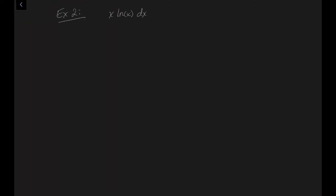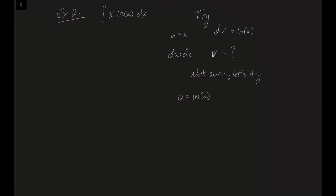Now let's look at the next example: the integral of x times the natural log of x. If we try U equals x and dV equals ln(x) dx, dU would be dx, but V would require integration by parts itself, so let's flip the substitution. Let's try U equals ln(x) and dV equals x dx. That tells us V equals x squared over 2 and dU equals 1 over x dx.